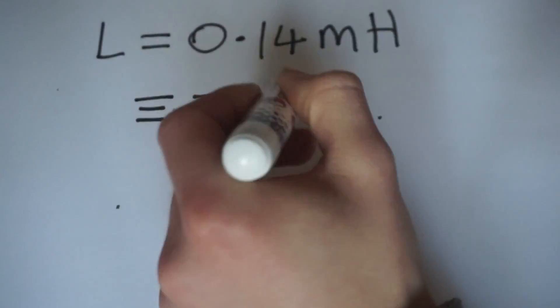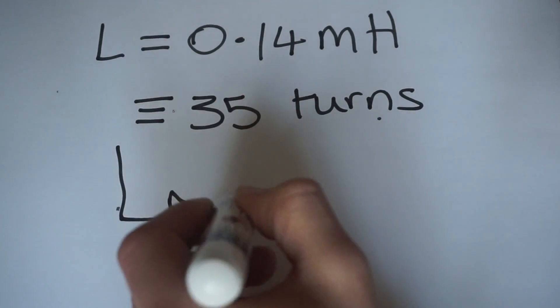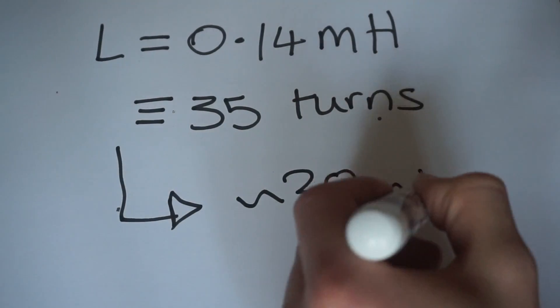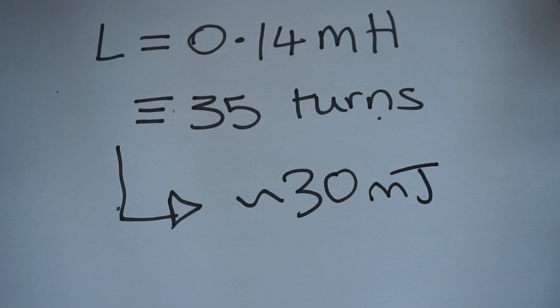When constructing our coil, we aimed for an inductance of around 0.14 millihenry, which is equivalent to 35 turns of superconducting wire around the former that we used. This would give us around 30 millijoules of energy, or enough to light an LED provided we applied 20 amps of current.